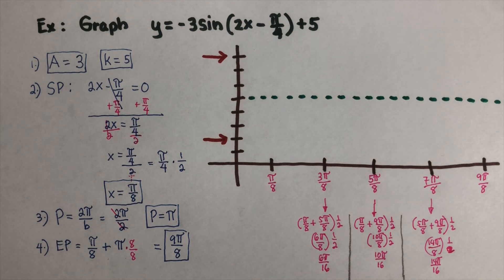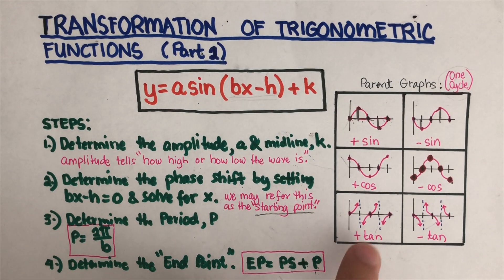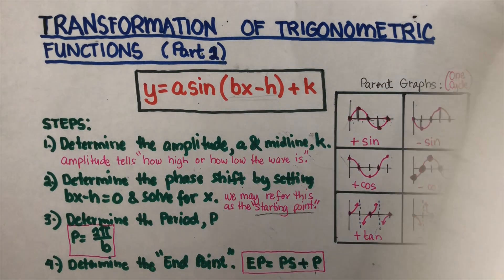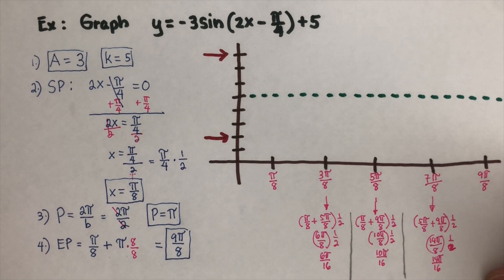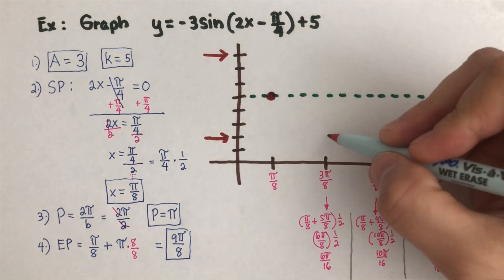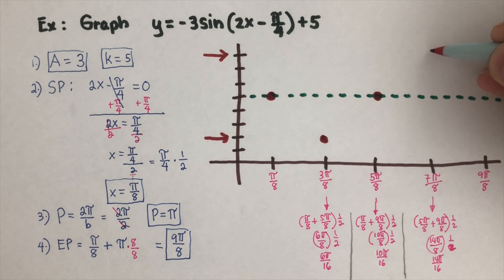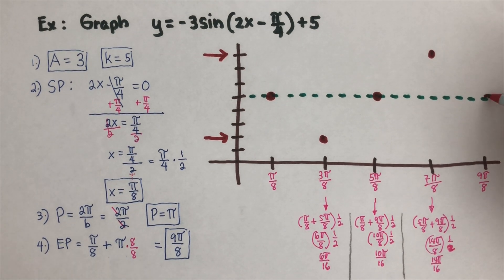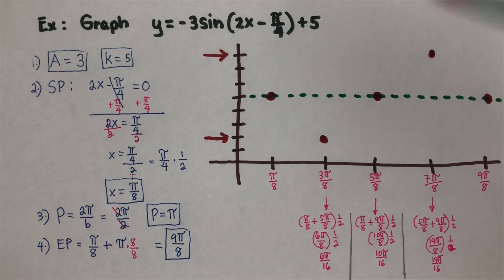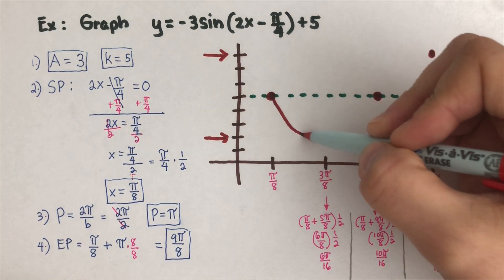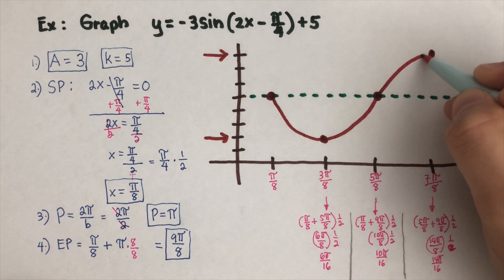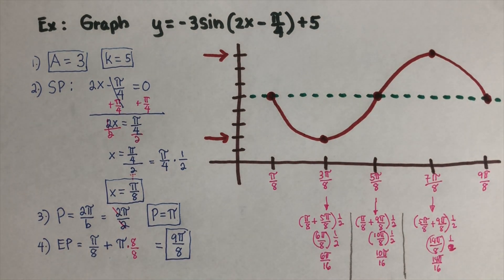Now we are ready to sketch the graph. Since this is a negative sine function, the shape goes down first. The dots start at the starting point, go down, come back up through the midline, continue up to the maximum, and return to the midline at the endpoint. Sketching through those five points gives us one complete cycle of this negative sine function.